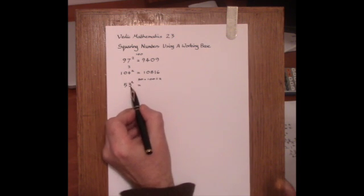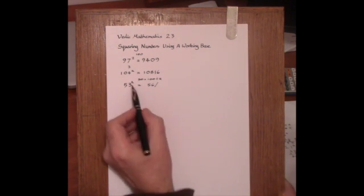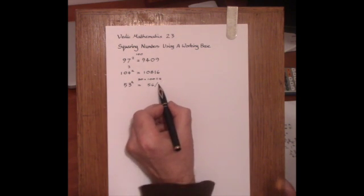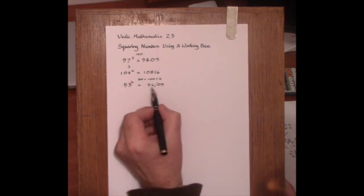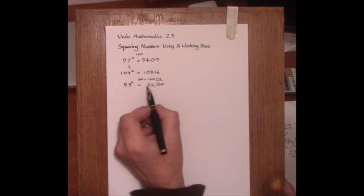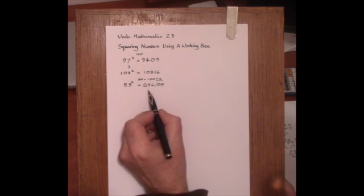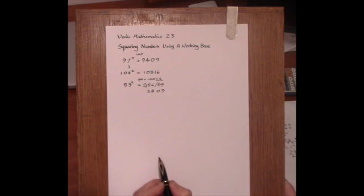So we take the surplus 3 and add it on to the 53 making 56, and then on the right hand side we put down the square of 3 which is 09. And then dividing the left hand part by this proportionality divided by 2, 2 into 56 goes 28, and the answer is 2809.